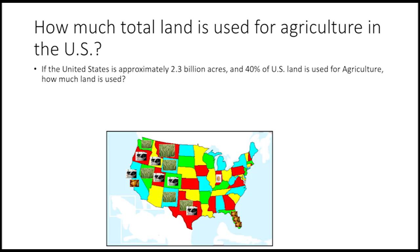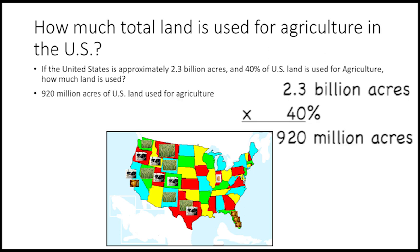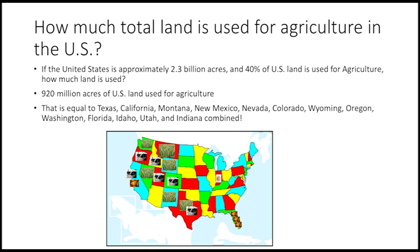Agriculture uses a lot of land too. If the U.S. is about 2.3 billion acres, and 40% of U.S. land is used for agriculture, how much land is used? 920 million acres of U.S. land is used for agriculture. That is equal to the size of Texas, California, Montana, New Mexico, Nevada, Colorado, Wyoming, Oregon, Washington, Florida, Idaho, Utah, and Indiana combined.